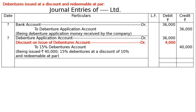Hence the allotment was done on 40,000 debentures and we got 10 percent less. The discount on issue of debentures is 10 percent, which is 4,000, meaning we received 36,000. Journal entries are always totaled — both debit and credit columns total to 76,000. This is the final answer.